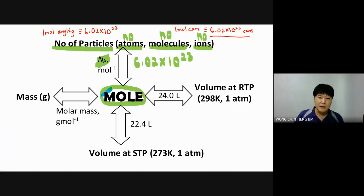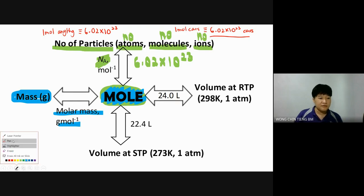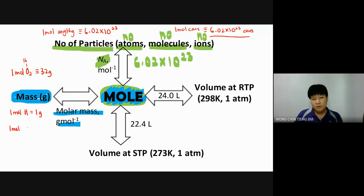If we change number of moles to mass, the relationship is molar mass. Molar mass is quite simple — everybody should be able to calculate it. For example, one mole of oxygen gas O₂ equals 32 grams (O is 16, times 2 = 32). One mole of hydrogen is 1 gram. One mole of nitrogen is 14 grams, one mole of chlorine is 35.5 grams — that is your relative atomic mass — that is your molar mass.